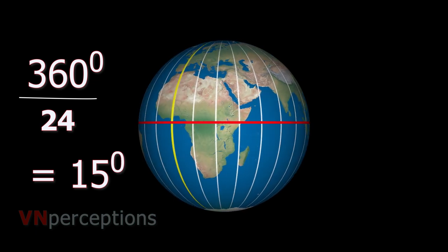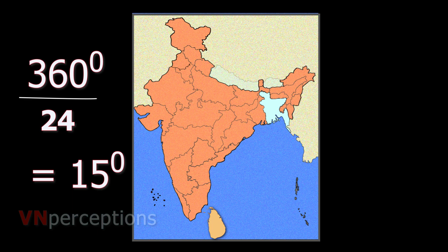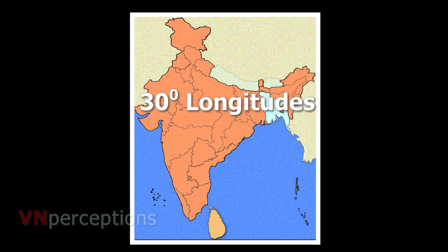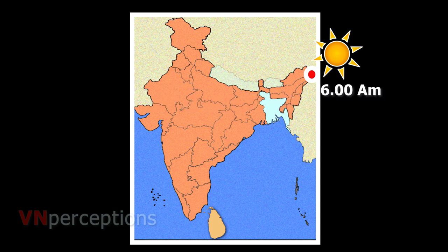If I take India, the longitudinal extent of India is approximately 30 degree longitudes. Supposing I take the easternmost end of India in Arunachal Pradesh, say there is a sunrise and I say the time is 6 o'clock based on the sunrise. After 2 hours, on the other end, on the western end of India, people will see sunrise.